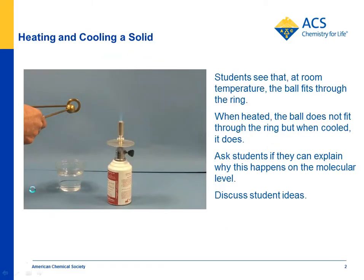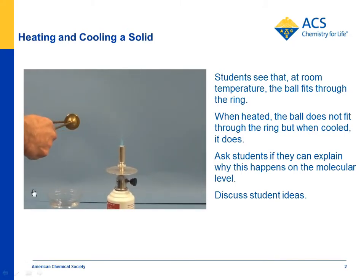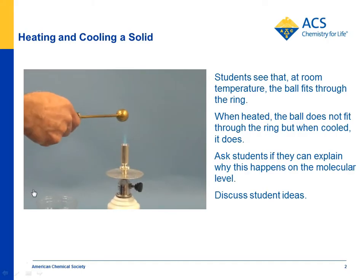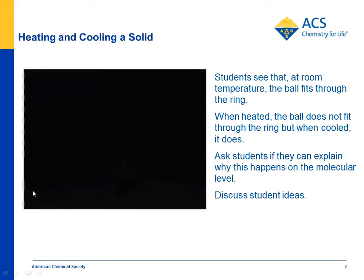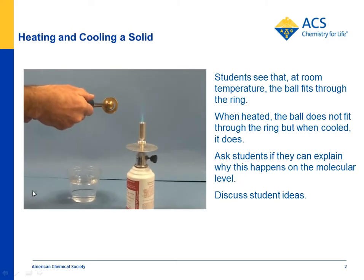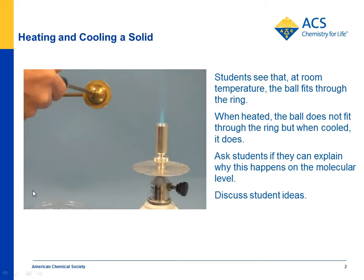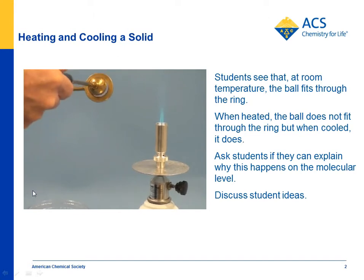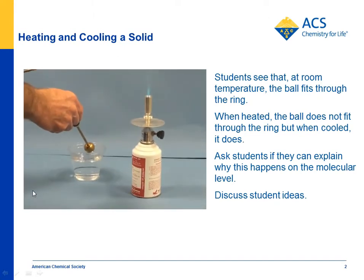Let's take a look at the activity — actually, it's a demonstration that you would do. If you don't have this equipment, you could show this video. This is an inexpensive brass ball and ring, but you need to use a Bunsen burner, a good heat source — a regular candle won't work. Here you see that after heating it, the ball will not pass through the ring, even though at room temperature it did.